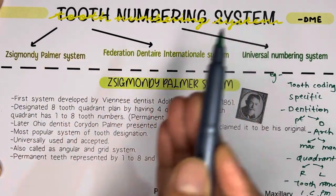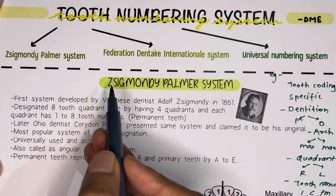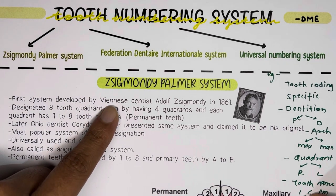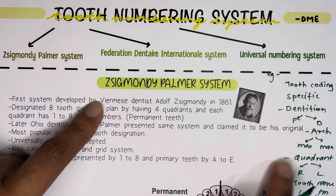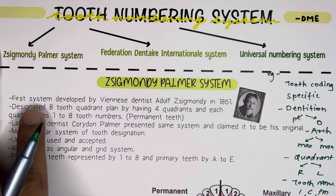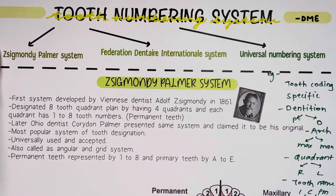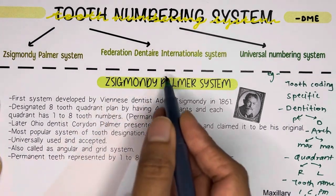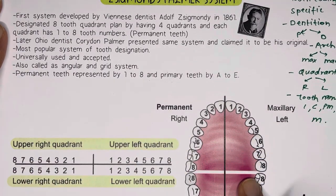To simplify things, scientists came up with tooth numbering systems. The first one introduced is known as the Zsigmondy-Palmer system, with a very interesting history. It was first given by a Venetian dentist named Adolf Zsigmondy in 1861. He designated an eight-tooth quadrant plan with four quadrants — eight teeth per quadrant for permanent teeth. Later, in 1870, another dentist from Ohio named Corydon Palmer presented the same system at an American Dental Association meeting.